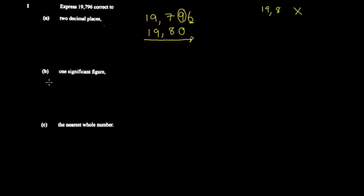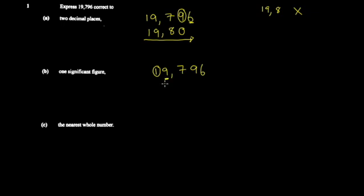Part b asks to correct the same number to one significant figure. You have to identify the first significant figure, which is the first non-zero digit when reading the number. Reading 19.796, the first significant figure is the 1 here, and you correct it using the digit to its right — the 9.